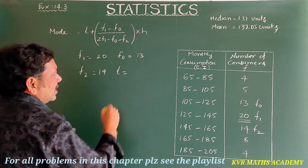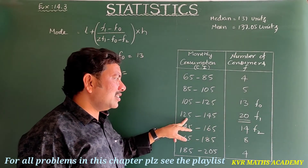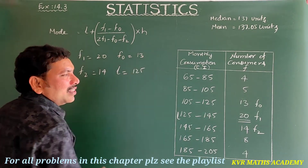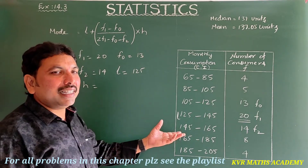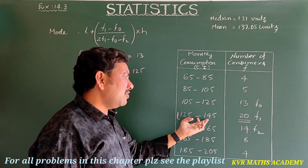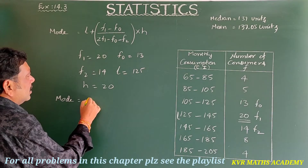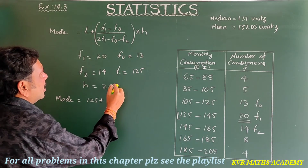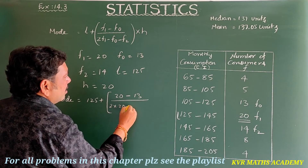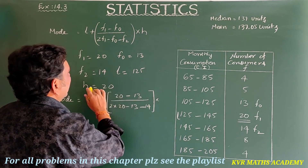Substituting: Mode = 125 + (20 − 13) / (2×20 − 13 − 14) × 20 = 125 + 7 / (40 − 27) × 20 = 125 + 7/13 × 20.